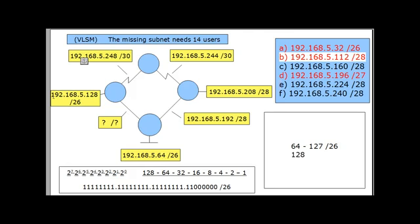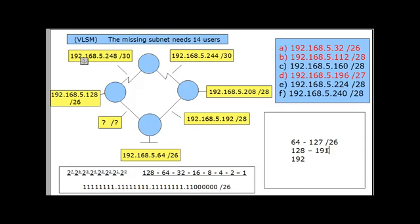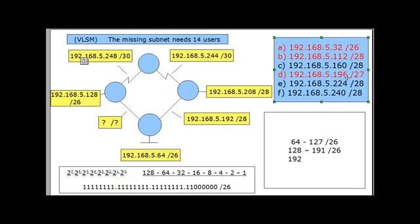Now let's look at 192.168.5.128/26. With a /26 mask, the last borrowed bit is still in the 64's place — magic number 64. So this network starts at 128 and goes to 191, because 128 plus 64 means the next network starts at 192. Looking at the answer choices, option C (160) falls inside this range of 128 to 191, so that is also an impossible and incorrect answer.